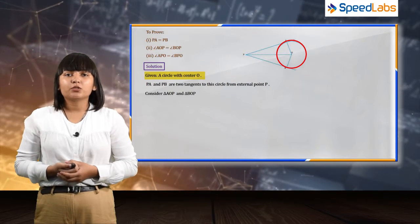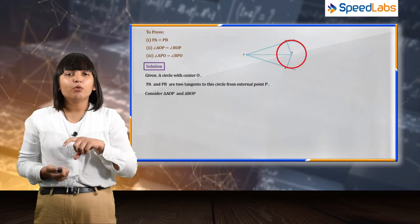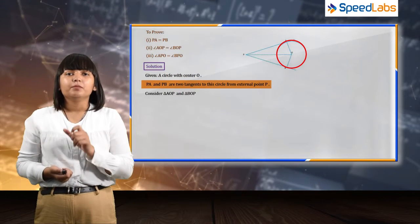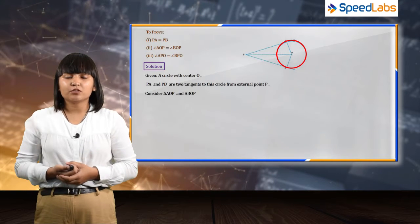In order to prove the triangles congruent, we can say that OA is equal to OB, that is the radius of the circle. We know that OA and OB are the radius of the circle. That is why they are same and of equal length.